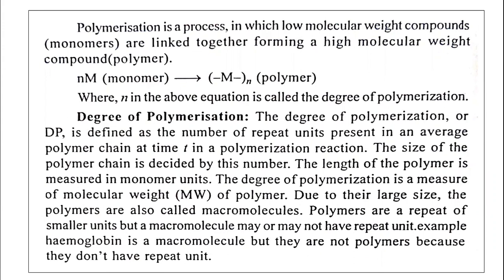These polymers are formed by a process called polymerization. Polymerization is a process in which low molecular weight compounds — that is, monomers, for example ethyne molecules — are linked together to form high molecular weight compounds. A number of monomer units get combined and linked to each other to form a polymer. Here, n is called the degree of polymerization.